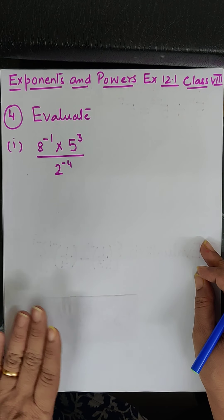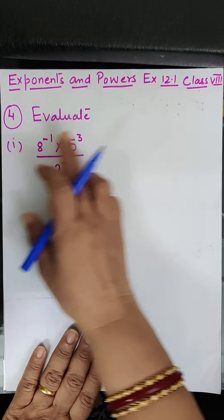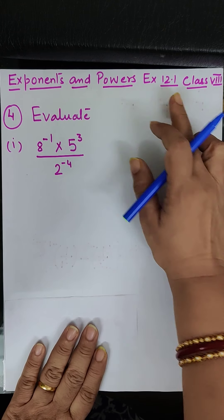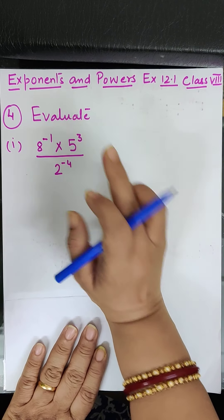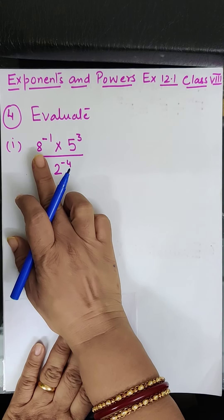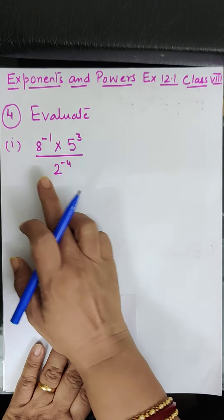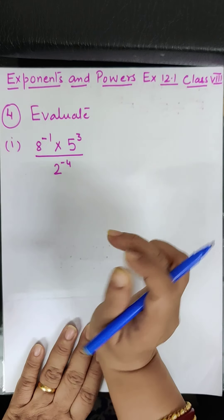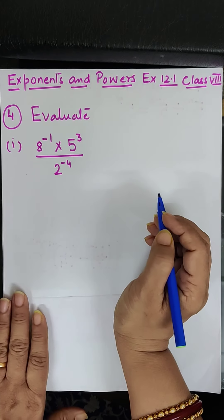Children, in today's class we shall start with question number 4 of exercise 12.1. The fourth question is: evaluate 8 to the power minus 1 into 5 to the power 3, divided by 2 to the power minus 4.